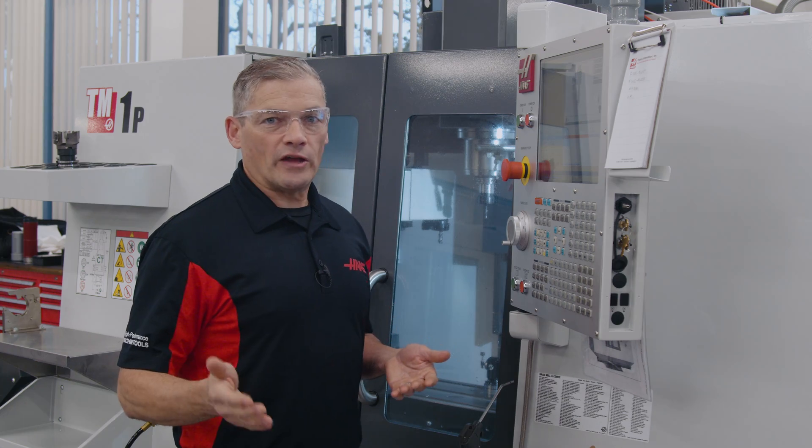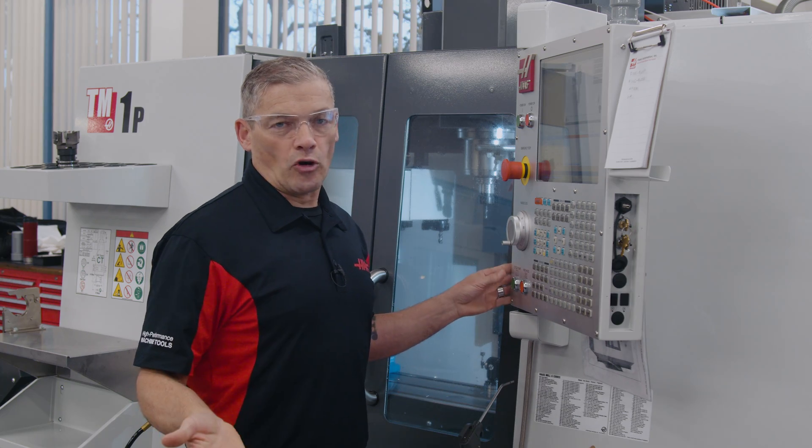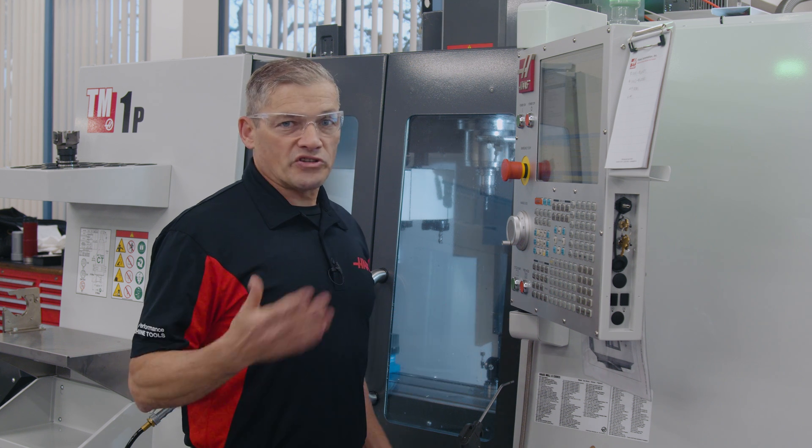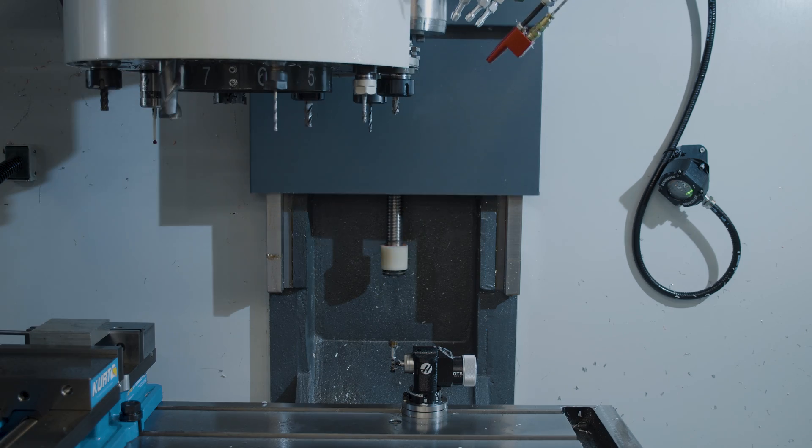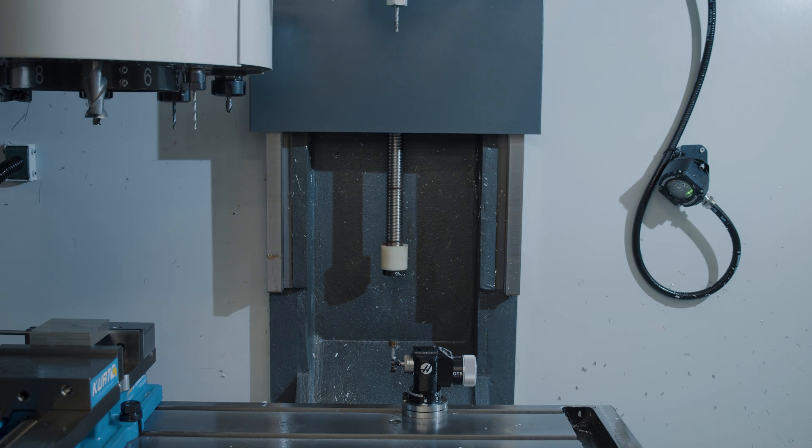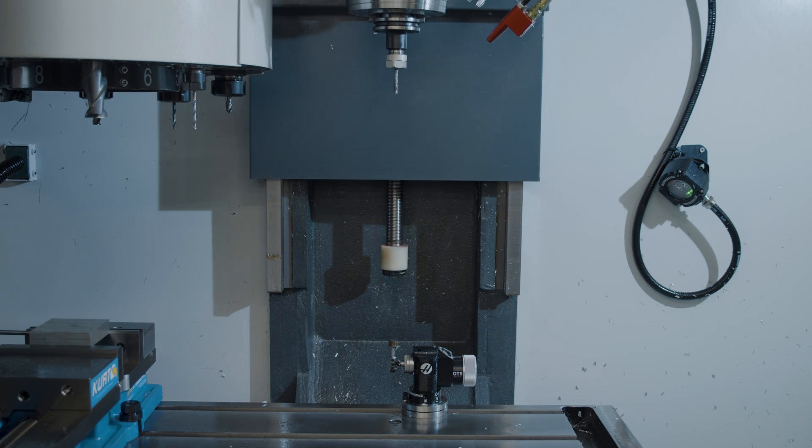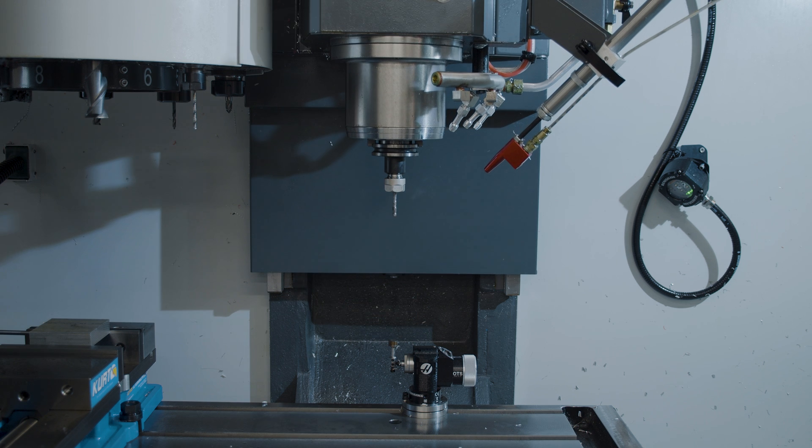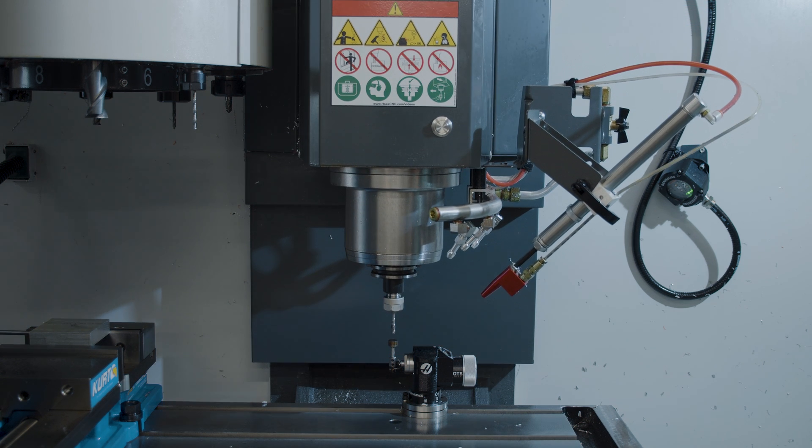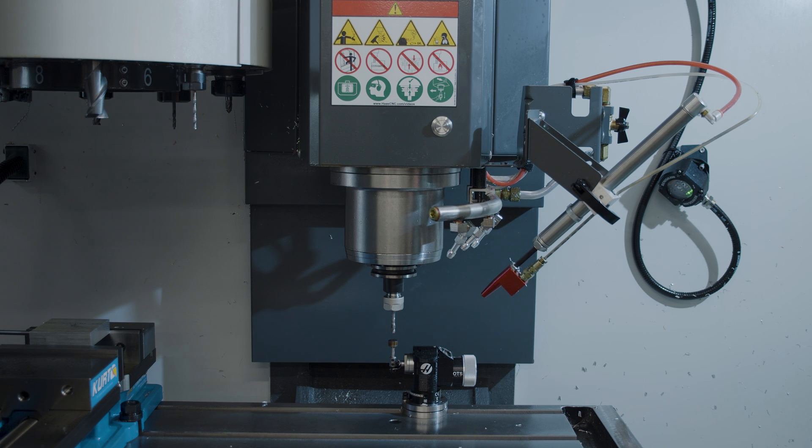With the value set, I'll press cycle start to begin the probing cycle. The machine automatically changes to the tool we selected. It then moves up to Z zero and then descends to touch off the probe. When it's done with the final slow touch off, the offset is updated. That's pretty easy.